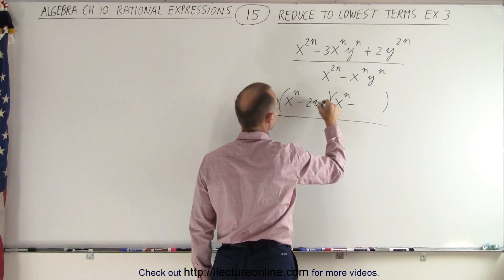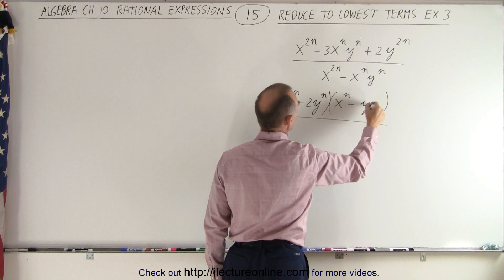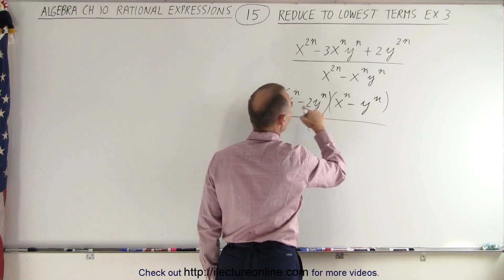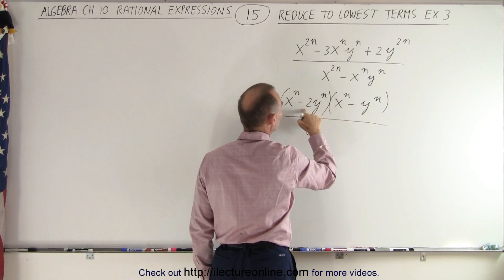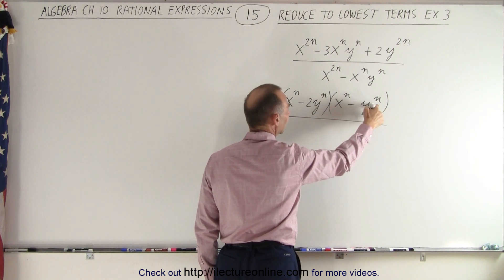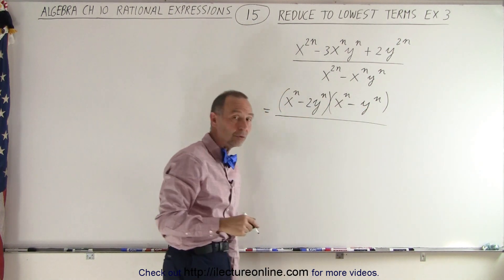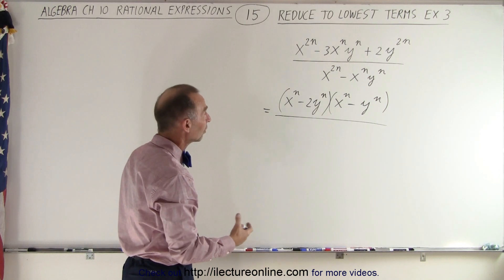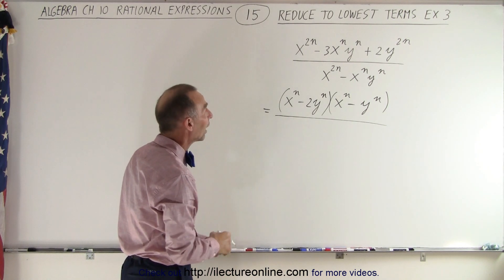I need a 2y to the n and a y to the n, because when I multiply these together I get a positive 2y to the 2n. When I multiply y to the n times y to the n, I need to add exponents. n plus n is 2n, so that becomes plus 2y to the 2n.